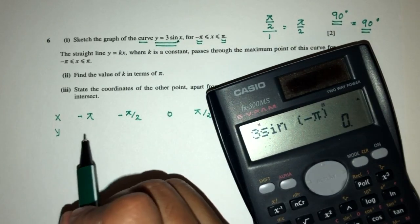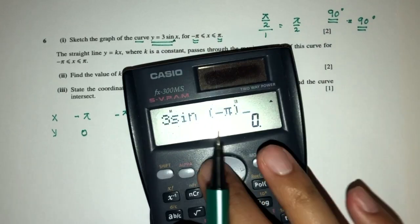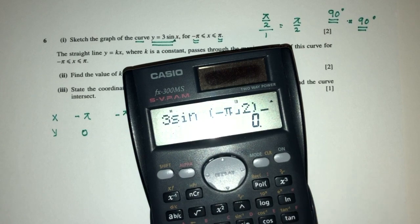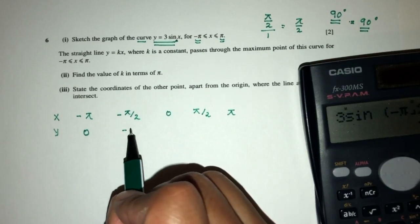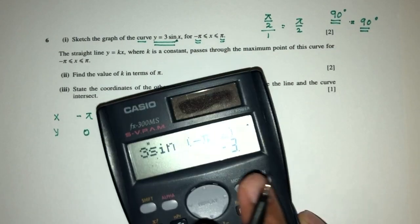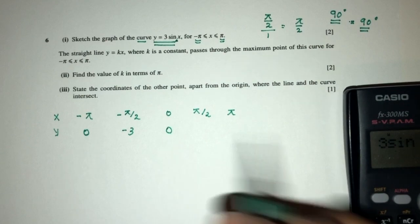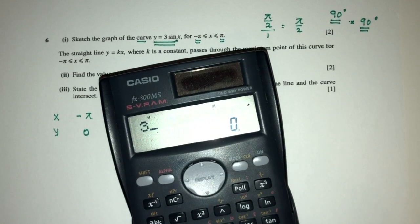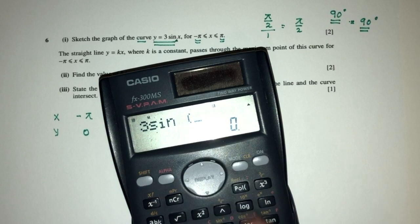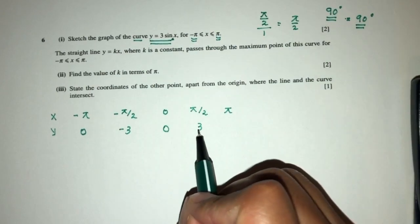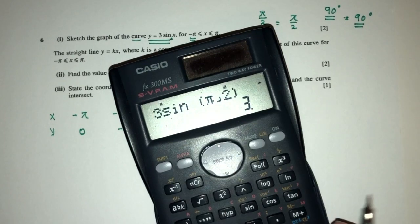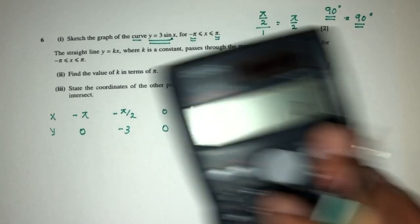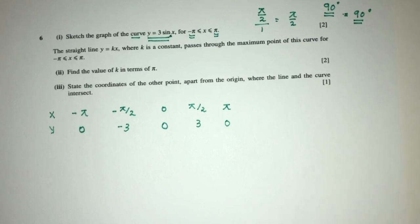So 3 sine of minus pi, that will give you 0. Then we have minus pi over 2, that will be minus 3. And again here we have 0, that will be 0. Pi by 2, so 3 sine pi by 2, that will be 3. And this will be 0.